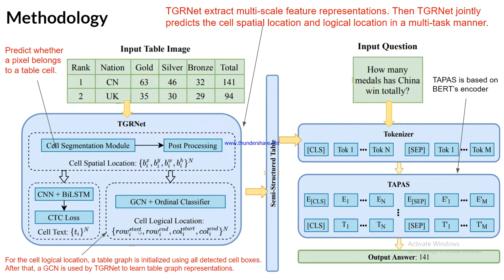For cell logical location, the bounding box information is used with a Graph Convolutional Network (GCN) with an ordinal classifier. The table graph is initialized using all detected cell boxes. GCN is then used by TGR-Net to learn the table graph representation, which is then converted into a semi-structured table.